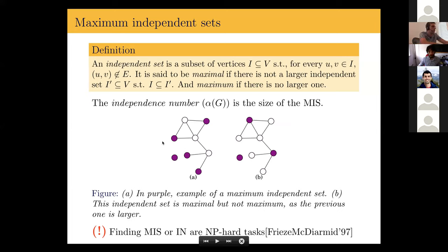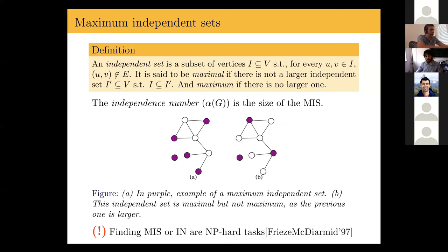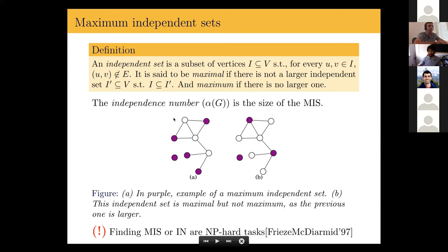An independent set is said to be maximal if you cannot add another vertex such that the vertex set is still an independent set. Both of these independent sets in this example are maximal independent sets. There is a further notion, which is maximum independent set, which is an independent set of the maximum possible size for the given graph. The independent set on the left is maximum, but the independent set on the right is maximal because you cannot add further vertices, but it's not maximum because it's not of the maximum possible size.